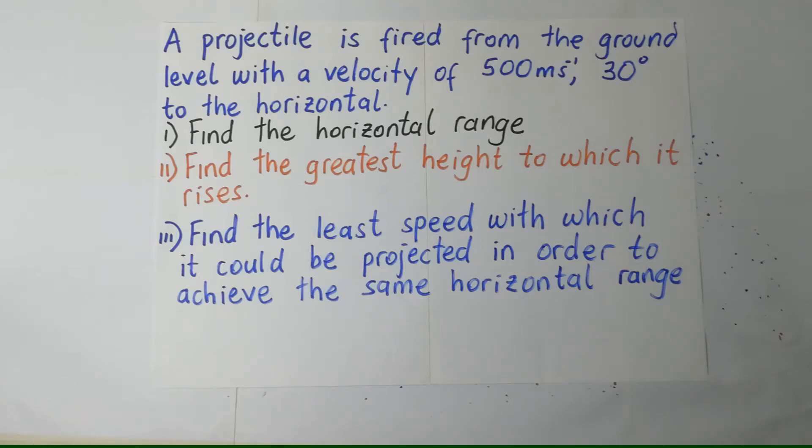A projectile is fired from the ground level with a velocity of 500 meters per second, 30 degrees to the horizontal. Find the horizontal range.